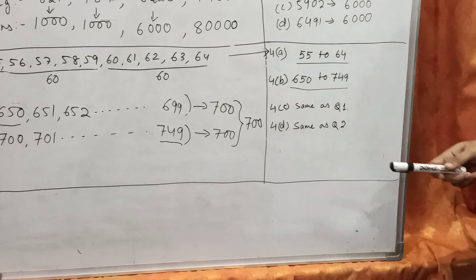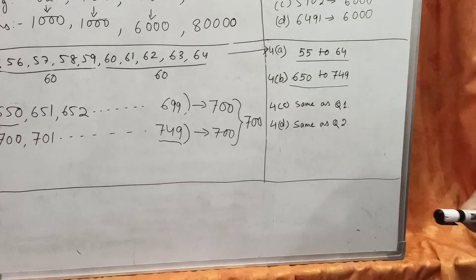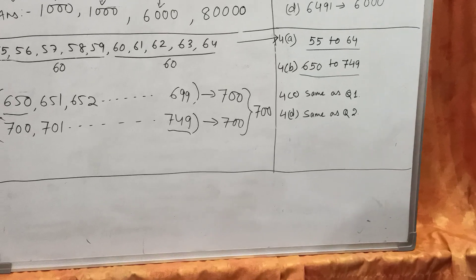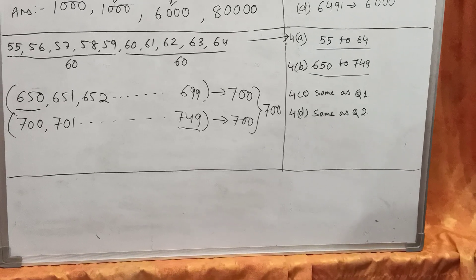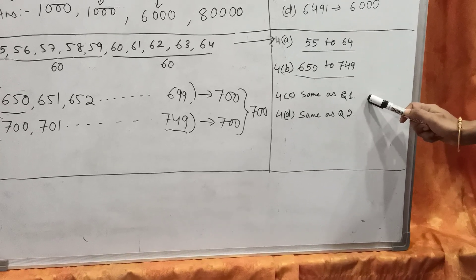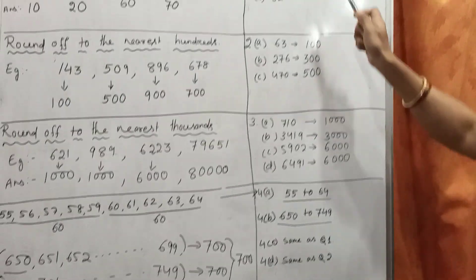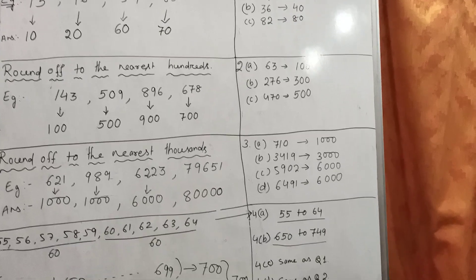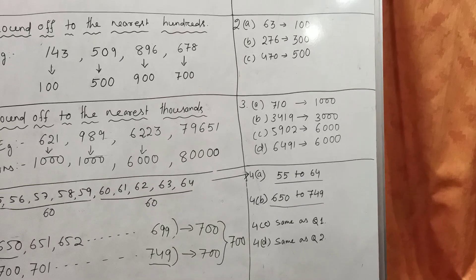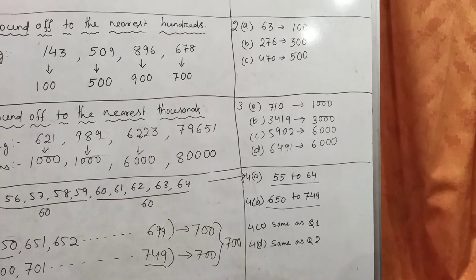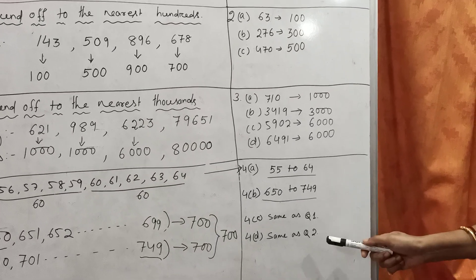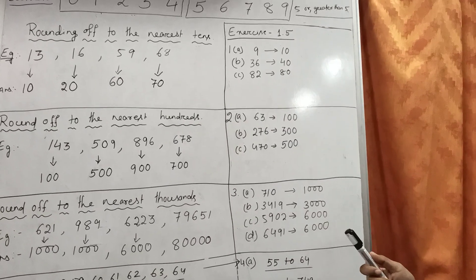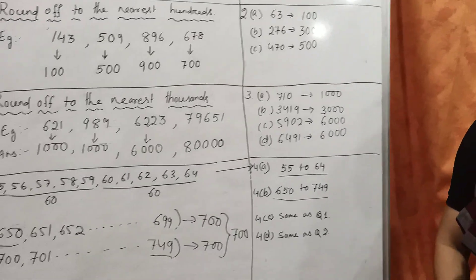Question number 4C: round 43, 97 and 66 to the nearest 10. This question is the same as question number 1, so you can do it yourself. And question number 4D: round 731 and 164 to the nearest 100. That is the same as question number 2, so this question you can also do yourself. Thank you children.